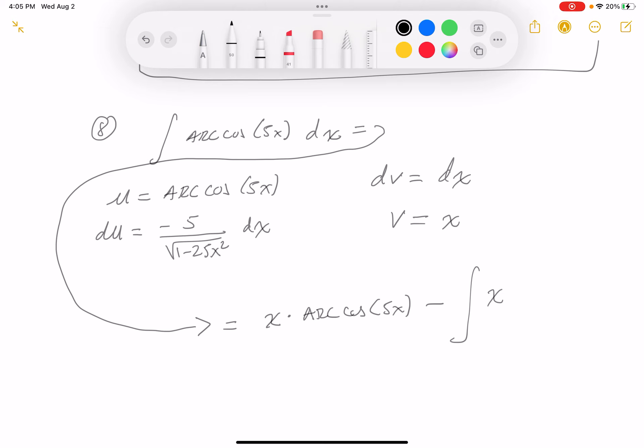I do see the 5, and over here, I would have this down now, 1 minus 25x squared dx.